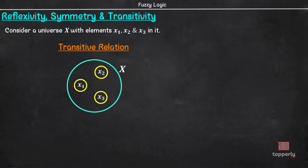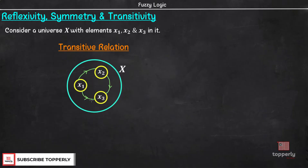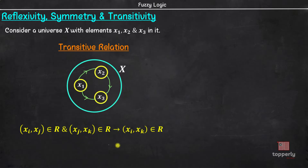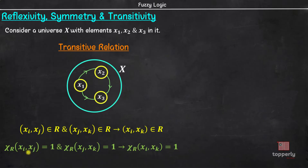Lastly, we have the transitivity property. Here, if there is an edge pointing from Xi to Xj and another edge pointing from Xj to Xk, then there should also be an edge pointing from Xi to Xk. Note the direction of this arrow — it is from X1 to X3, and not from X3 to X1. So, a relation R is transitive if (Xi, Xj) belongs to R and (Xj, Xk) belongs to R, then (Xi, Xk) also belongs to R. Equivalently, if the membership value of (Xi, Xj) is 1 and the membership value of (Xj, Xk) is 1, then the membership value of (Xi, Xk) should also be 1 in relation R.